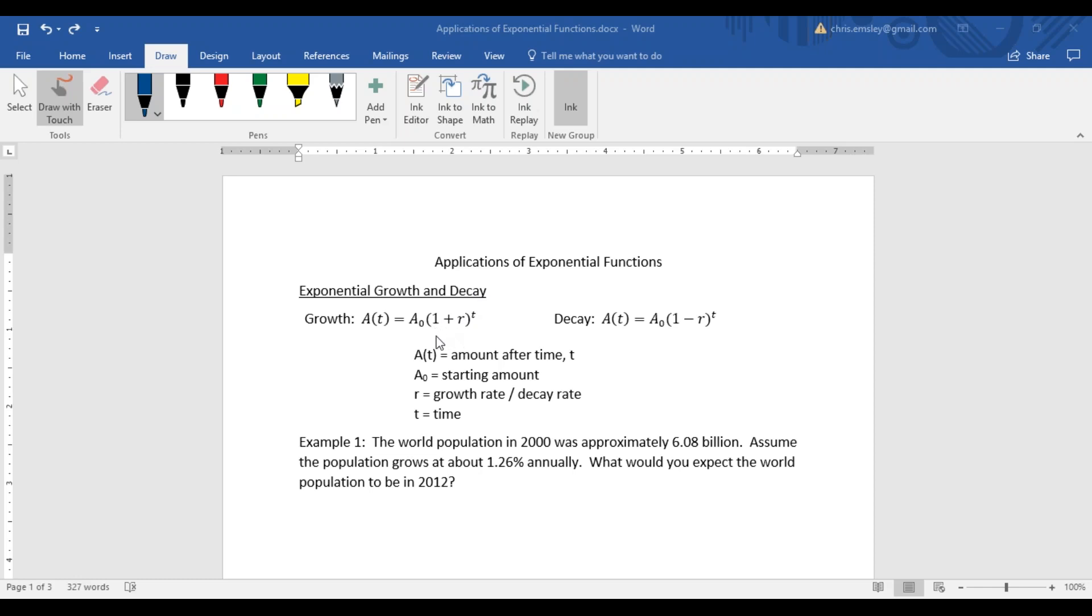If we're talking about exponential growth, what we have in the parentheses, our base is 1 plus our growth rate. If it's exponential decay, we just have 1 minus that growth rate, which would be the percent given in the problem.